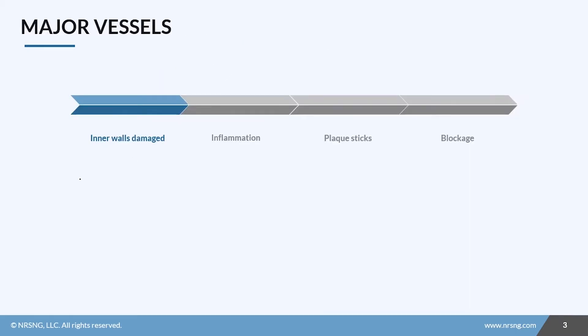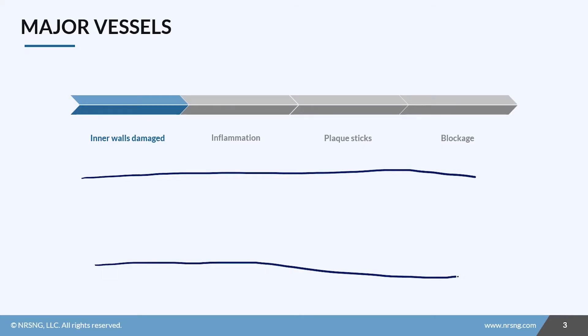I'm going to give you a timeline explaining how the coronary artery disease process works. So this is our vessel — if we have high blood pressure, it's going to damage the vessel walls by damaging the tissue of the walls.